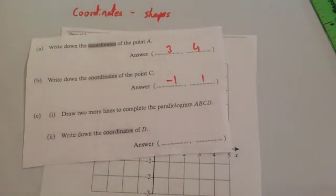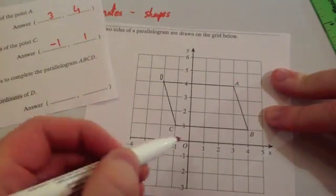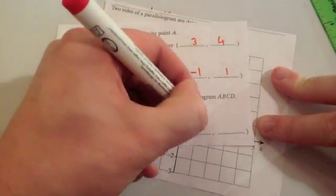And the question says, draw two more lines to complete the parallelogram. So we've done that bit. This is write down the coordinate of D. So the coordinate of D is minus two across, four up. So it would be minus two, four.